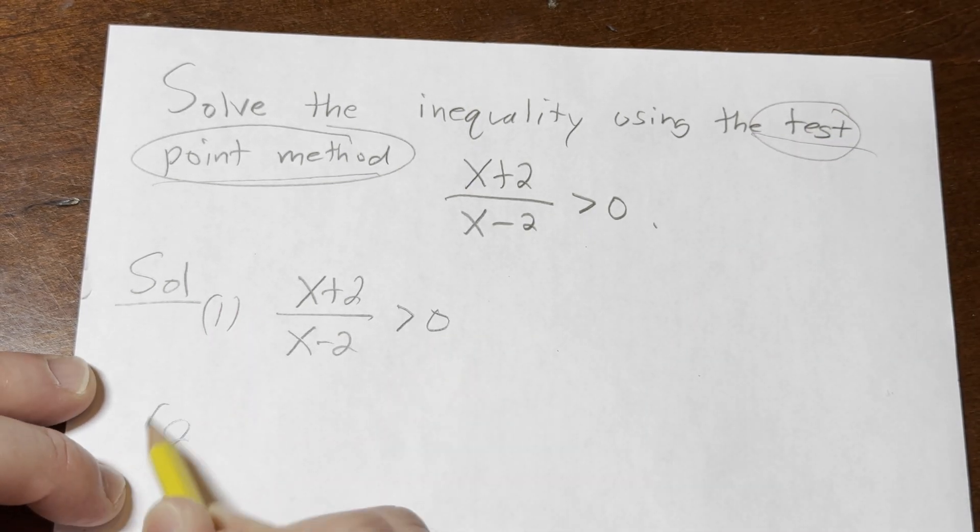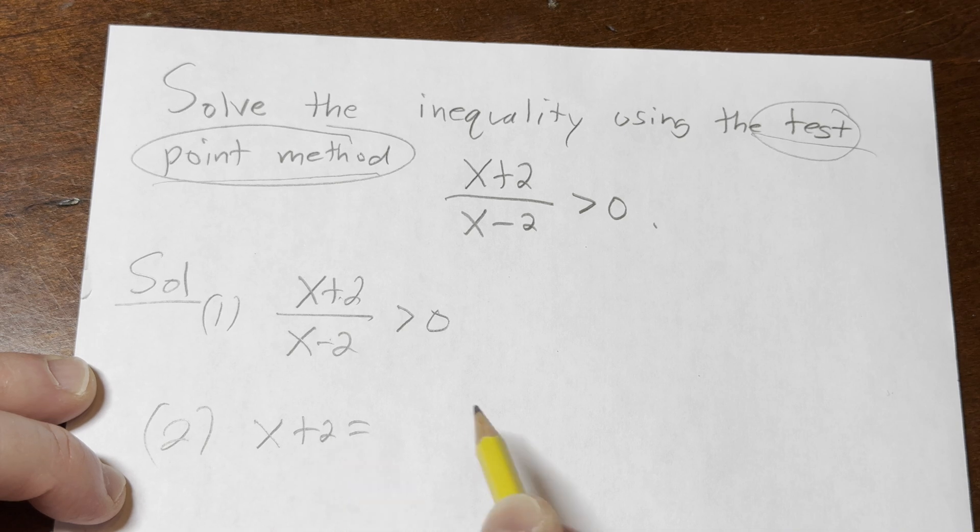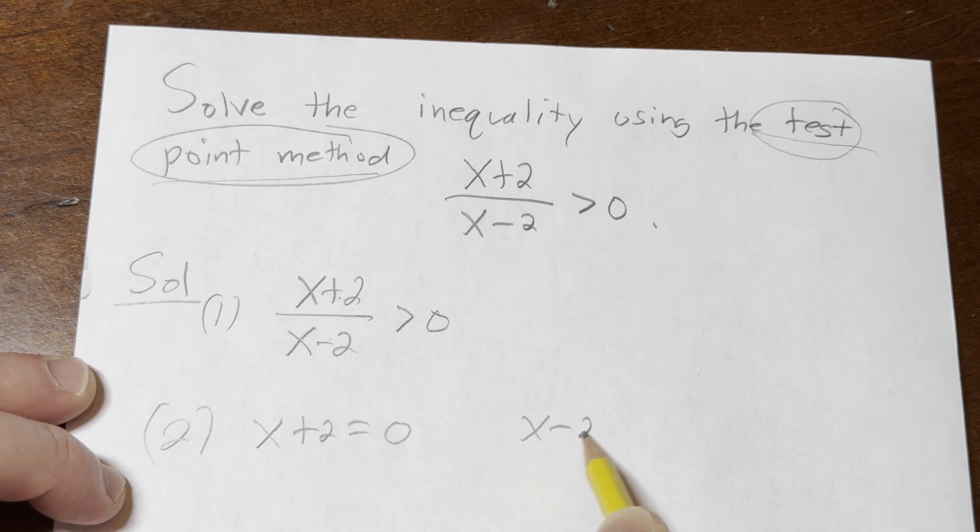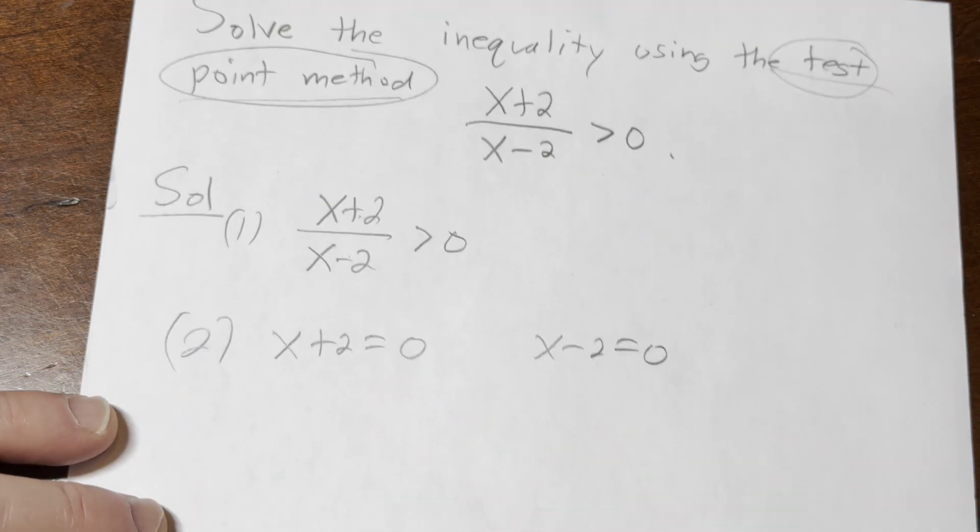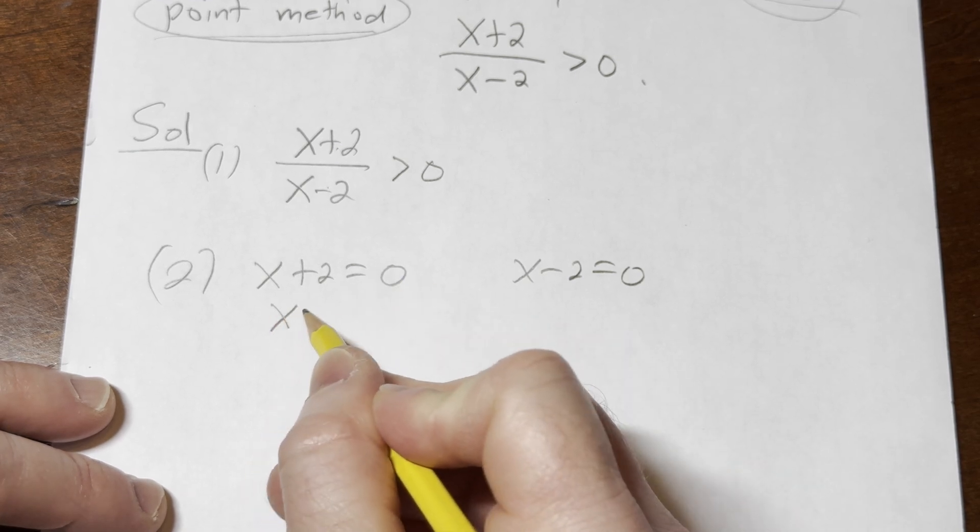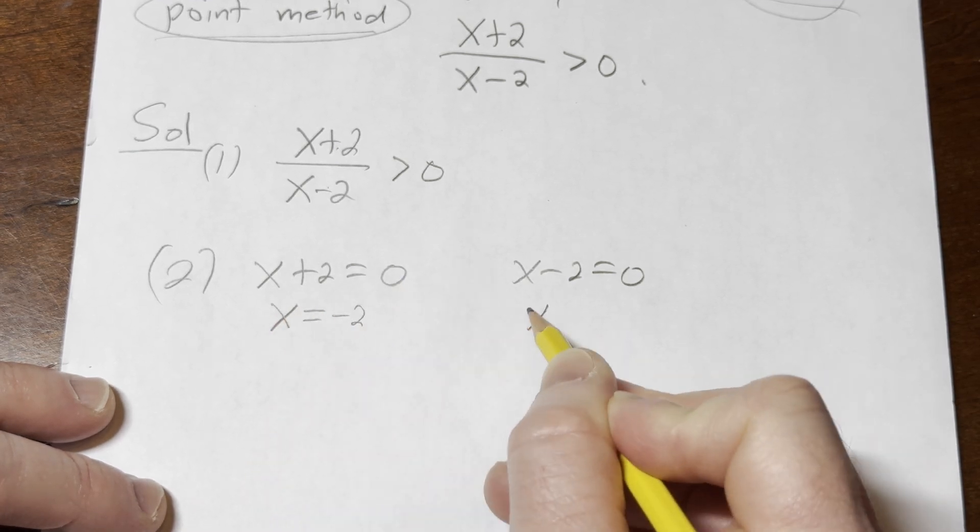So this is step one. Step two is to set each of the numerator and denominator equal to zero. We solve each of these simple equations so we get x = -2 and we get x = 2.